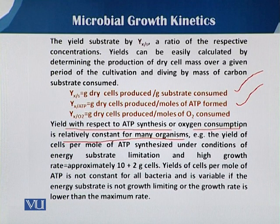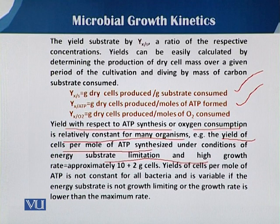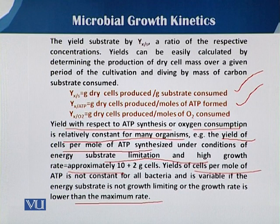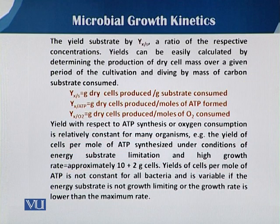However, the yield of cells per mole of ATP synthesized under conditions of energy substrate limitation and high growth rate — approximately 10 ± 2 grams of cells per mole of ATP — is not constant for all bacteria. It can vary, and when the growth rate is lower than the maximum rate, different bacteria and organisms have different requirements, which affects the yield coefficient.